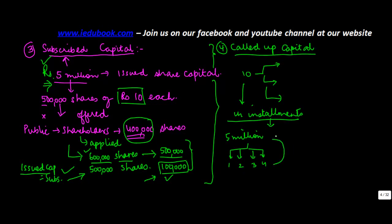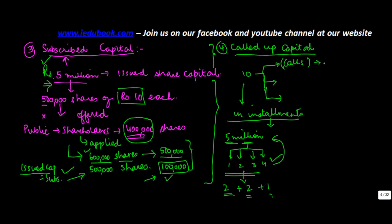Shareholders want to buy shares worth rupees 5 million but they can't put in 5 million in one go. So they say okay, we can put 2 plus 2 plus 1. The benefit for the company is that the shares will be fully subscribed — they will get their money, though not now but in stages. So just to encourage the number of investors, especially for public companies, the company calls money in stages which are known as calls.